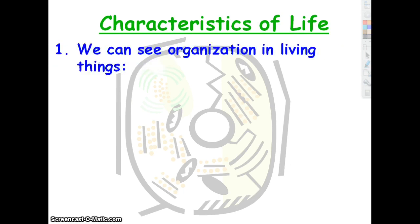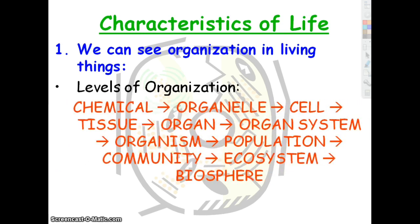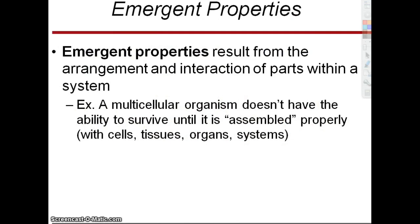The first characteristic living things share is that they're organized — they're put together in a particular way. We know these levels of organization: we start at the chemical level with atoms, and atoms make compounds. If those compounds are assembled in a particular way, we get organelles. An organelle is a cell part that carries on a particular function. If we assemble several organelles in a particular way, we get a cell, and it goes on from there — tissue, organ. We call these properties emergent properties: a property that results from a particular arrangement.